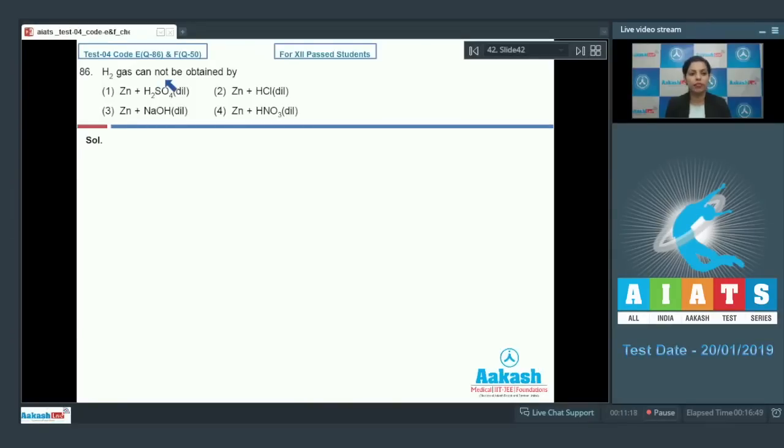Question number 86: Hydrogen gas cannot be obtained by generally dilute acids when reacting with metals. There is the formation of hydrogen gas. Let's check. In case of the first option, zinc is reacting with H2SO4 dilute sulfuric acid. Hydrogen gas would be evolved in this case, so this is not the correct option.